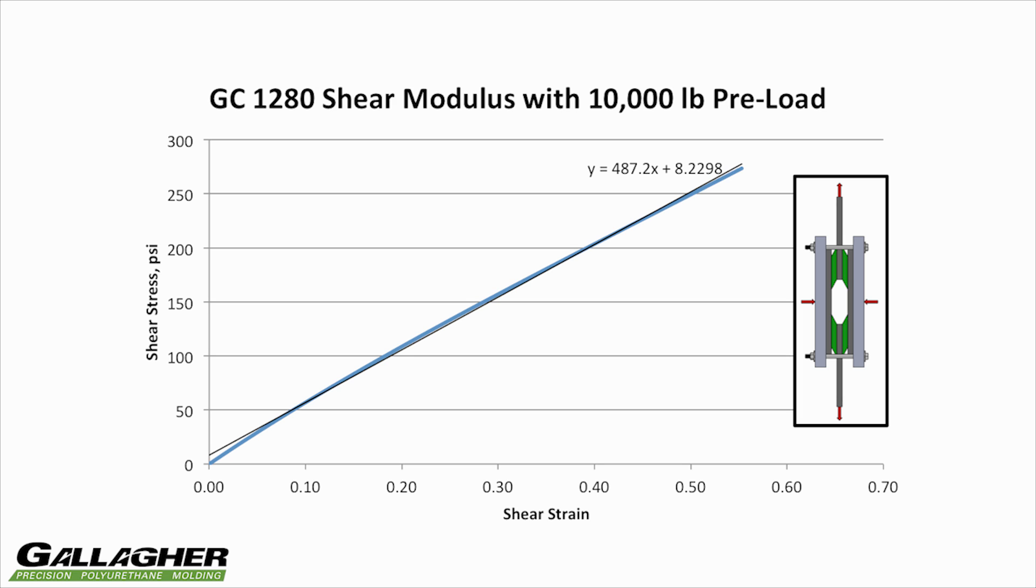By using polyurethanes in shear, a low spring rate can be achieved. The principle of superposition is useful to show that polyurethanes can be used in compression to support heavy loads and at the same time remain compliant in shear.